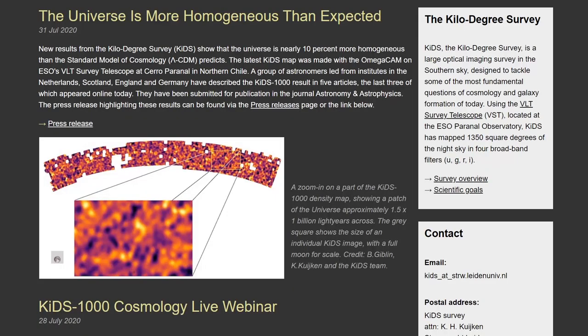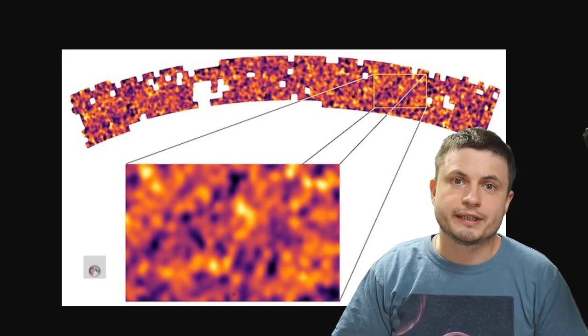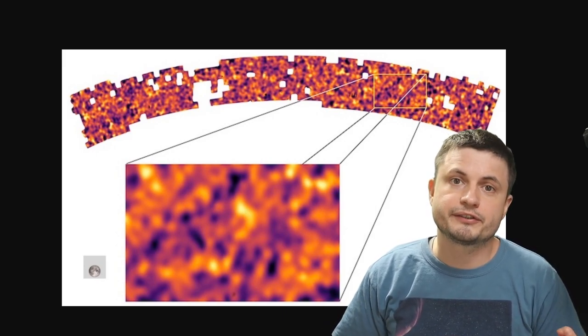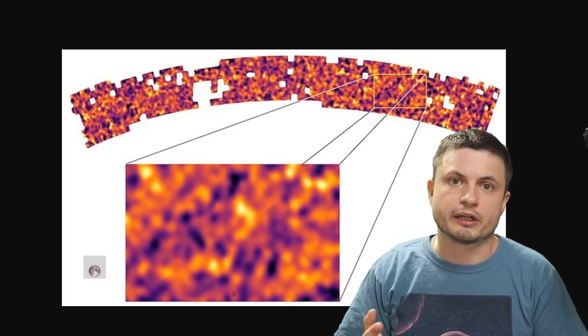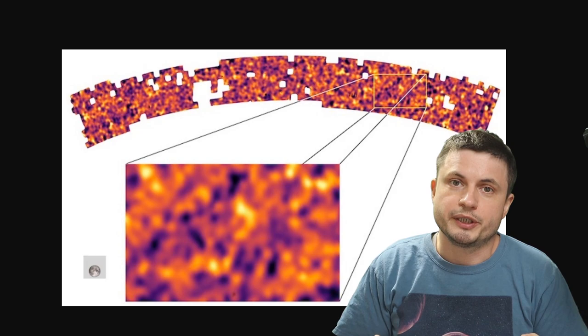For example, the most recent release of the KIDS survey or kilodegree survey that essentially analyzed the universe around us, discovered that certain parts of the universe and certain clumps in those parts seem to be about 10% thinner in terms of the amount of dark matter in them than it should be. In other words, it was more homogenous and didn't possess the exactly same amount of density as what we usually create in these super simulations in Illustrius or other projects. Now, this is not really a big difference just yet.